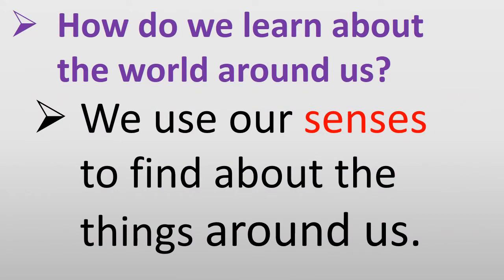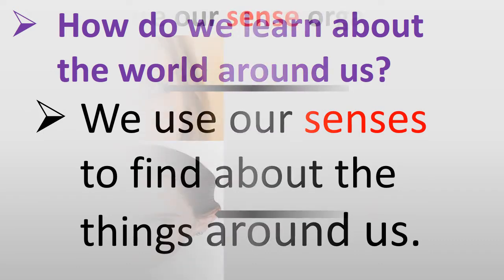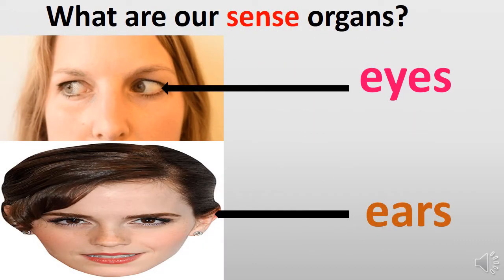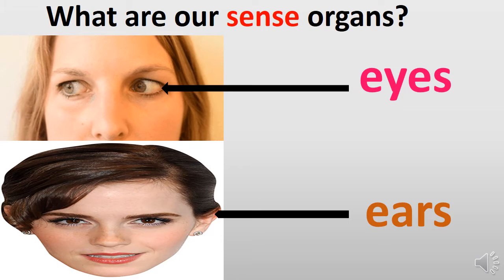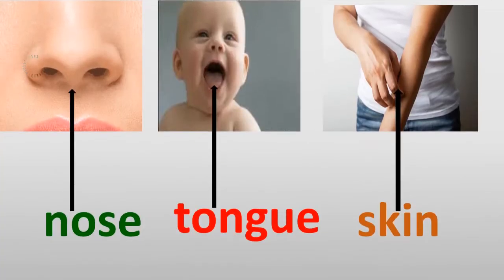How do we learn about the world around us? We use our senses to find out about the things around us. What are our sense organs? We have five sense organs: eyes, ears, nose, tongue, and skin.